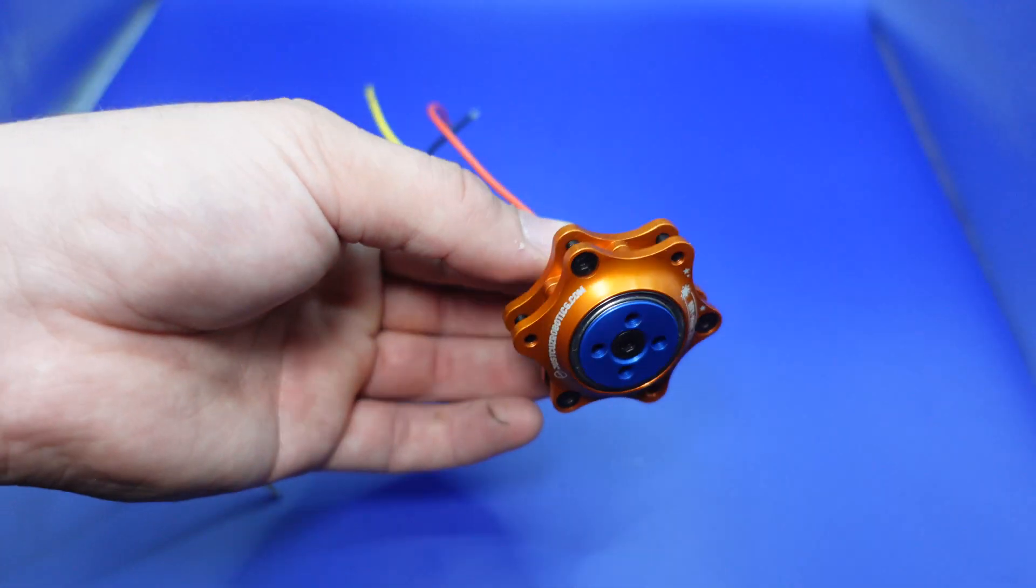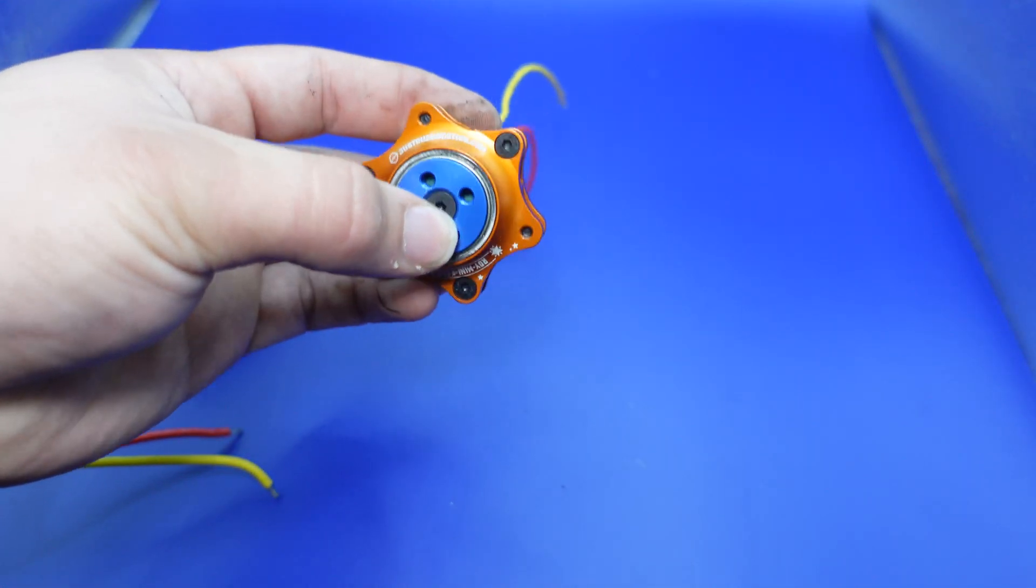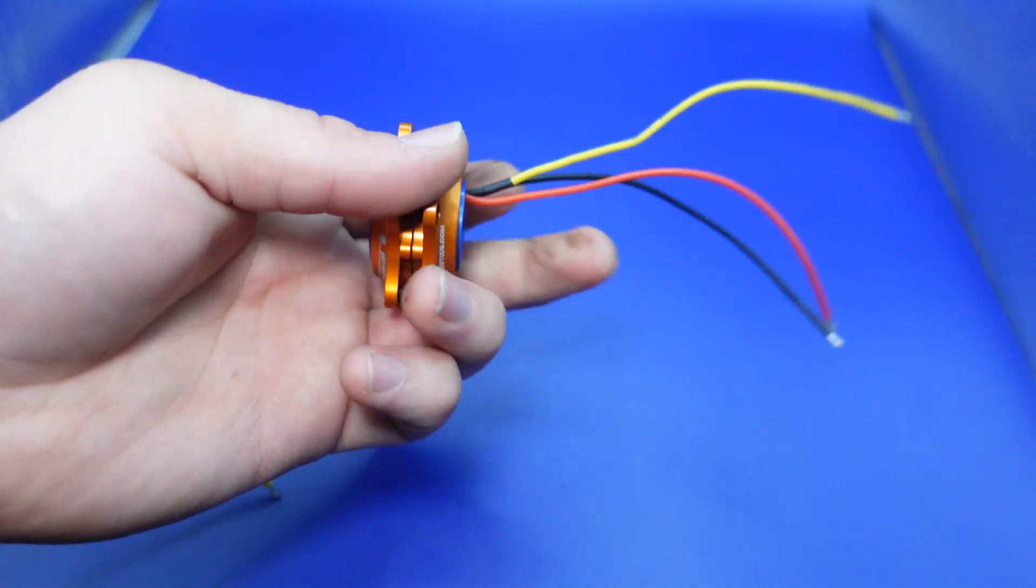I would recommend a 35 amp AM32 speed controller, which you can buy on my website. And I'll link that in the description for this guy as well.